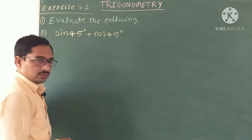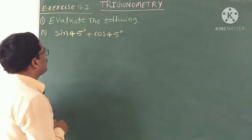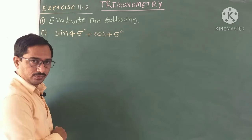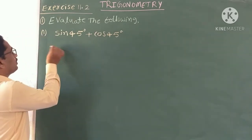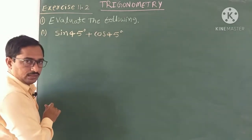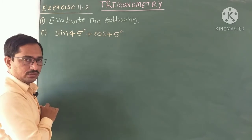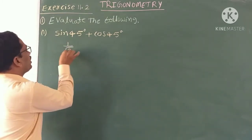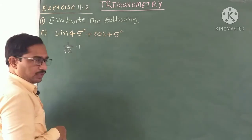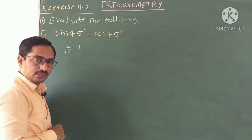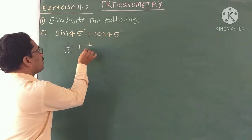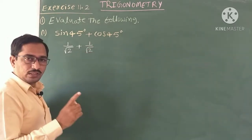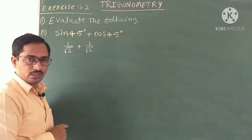Evaluate the following. The first one is sin 45 degrees plus cos 45 degrees. So write the answer. The value of sin 45 is 1 by root 2, plus cos 45 degrees, whose value is also the same: 1 by root 2. Remember that sin 45 and cos 45 values are both 1 by root 2.